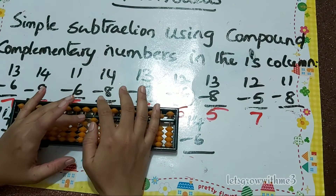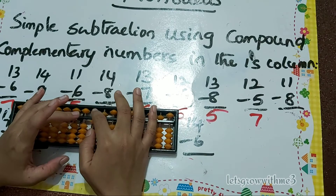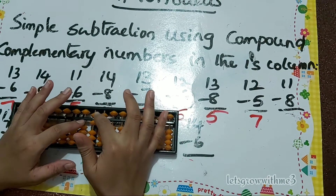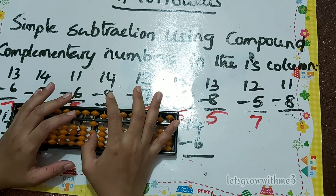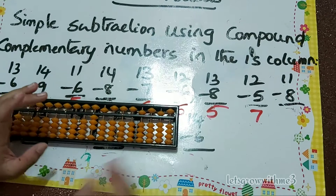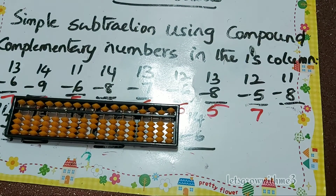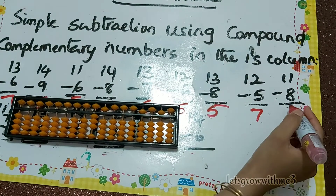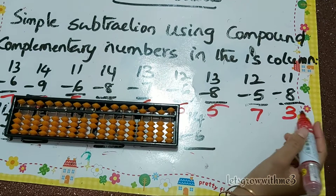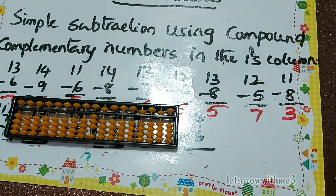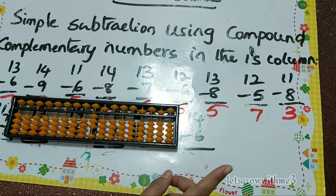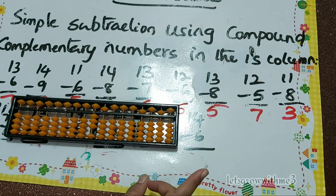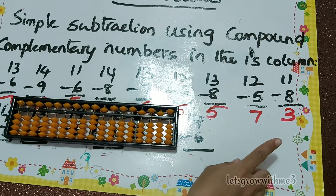We can't go combination — first we have to see big friend, so minus 10 plus 2. The answer is 3. This problem we don't need to go for combination; we can solve by the big friend method. 11 minus 8 is 3.